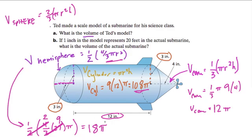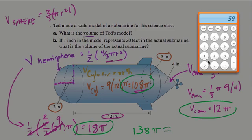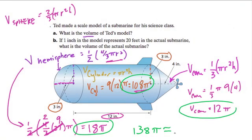Now we put it all together to find the total volume. The cone is 12π, the cylinder is 108π, and the hemisphere is 18π. Adding 18 and 12 gives 30, plus 108 gives 138π. Approximating pi as about 3, we get roughly 414 cubic inches.